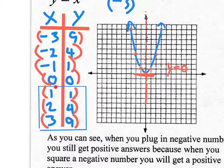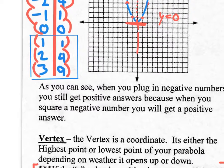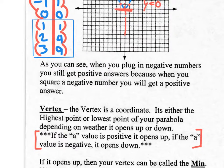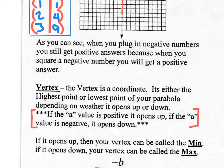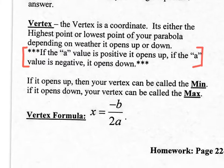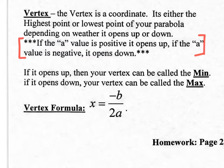We'll come back to those boxed coordinates in a little while. As you can see, when you plug in negative numbers you still end up with positive answers, because squaring a negative gives a positive. Now, the vertex — here's the definition: the vertex is a coordinate. It's either the highest point or the lowest point of your parabola, depending on whether it opens up or down.